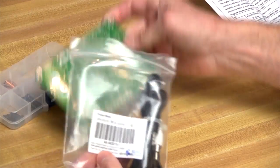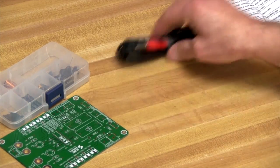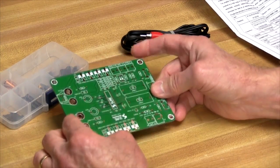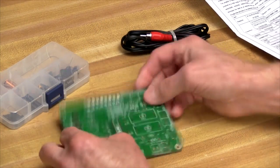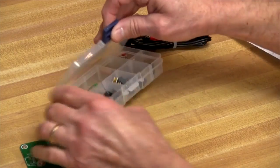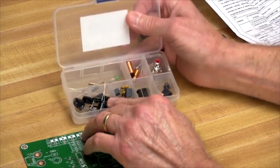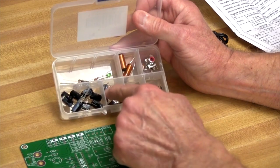For the unboxing, we have the PC board and an audio cable. The PC board is double-sided with nice quality and a good solder mask. This is a through-hole kit with no surface-mount components. All components come in a little box - resistors and capacitors.